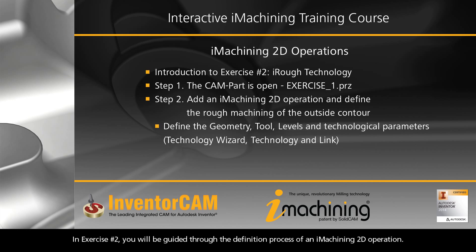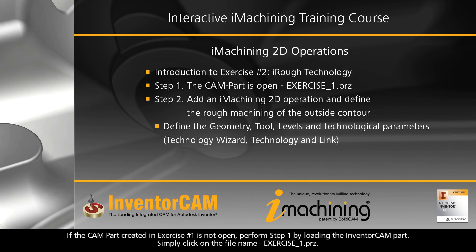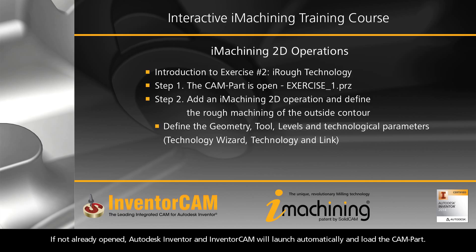In Exercise No. 2, you will be guided through the definition process of an iMachining 2D operation. If the CAM part created in Exercise No. 1 is not open, perform Step 1 by loading the InventorCam part. Simply click on the file name Exercise1.prz. If not already opened, Autodesk Inventor and InventorCam will launch automatically and load the CAM part.